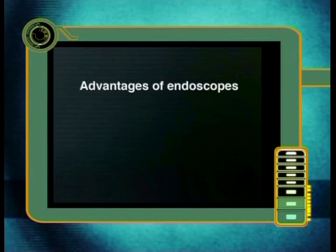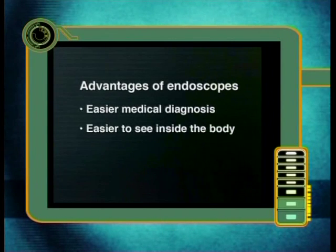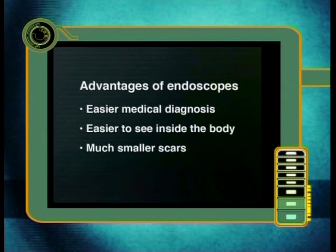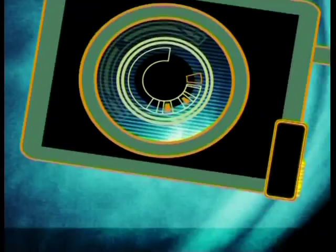There are many examples of how endoscopes have made medical procedures much easier. To recap some advantages of endoscopes: it is easier to make medical diagnoses, it is much easier to see inside the body, and it leaves only very small scars. So now we have seen that total internal reflection of light certainly does affect our lives in many ways. Your task for today is to write a report showing how fibre optic technology has changed society. This ends our study of light for now. Goodbye.